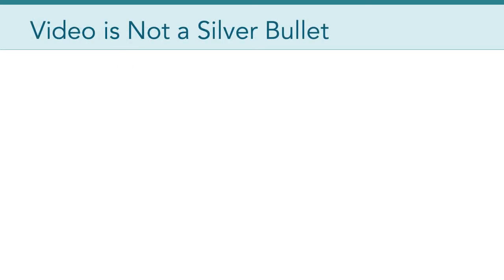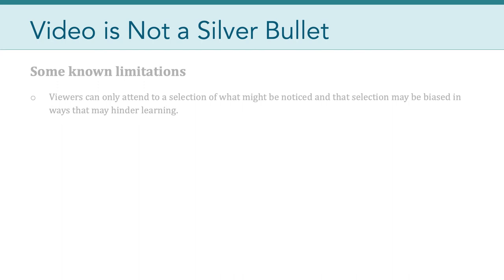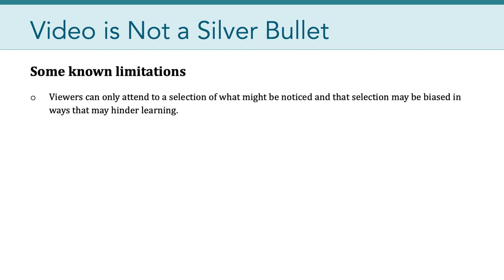Now let's counteract that with the idea that video in education is not a silver bullet. Viewers can only attend to a selection of what might be noticed in a video, and that selection may be biased in ways that may hinder learning. As we all know, there can be a lot going on in a video — learners have limited amounts of attention and must choose what they want to focus on, and they may not be able to absorb everything. Their biases will influence what they pay attention to.